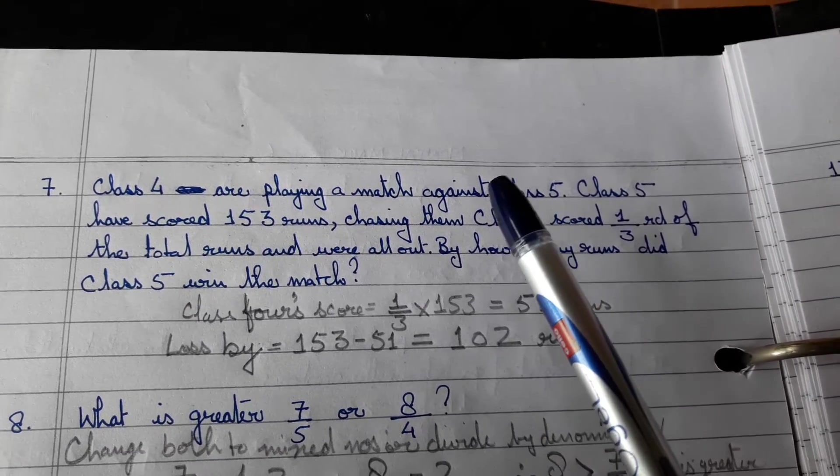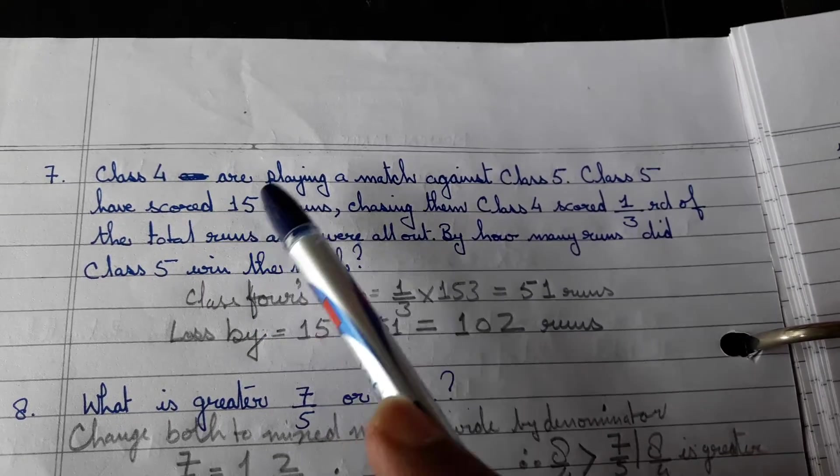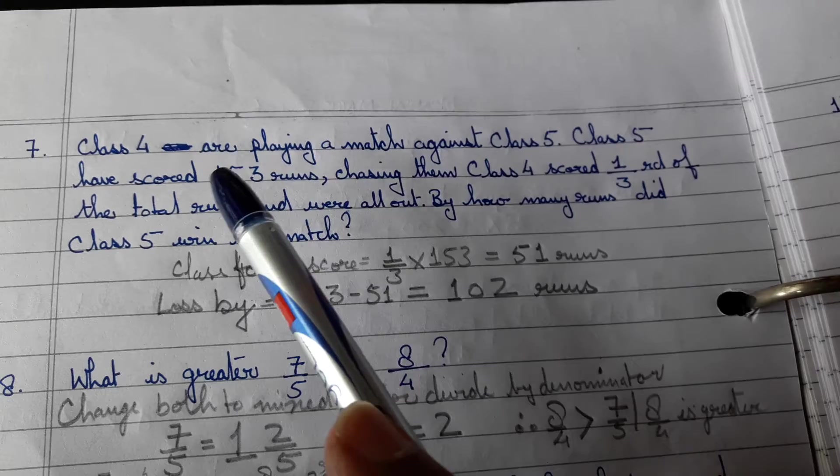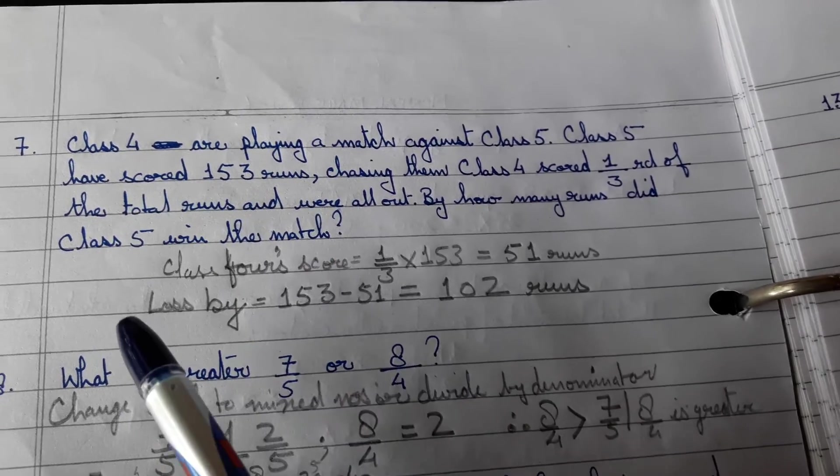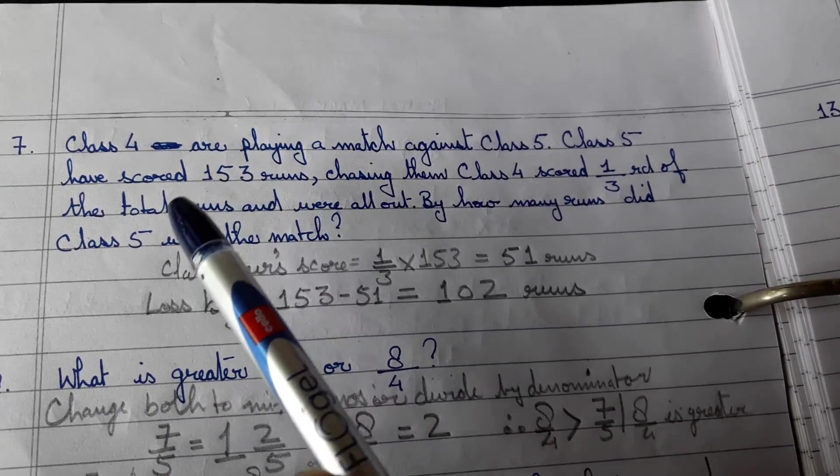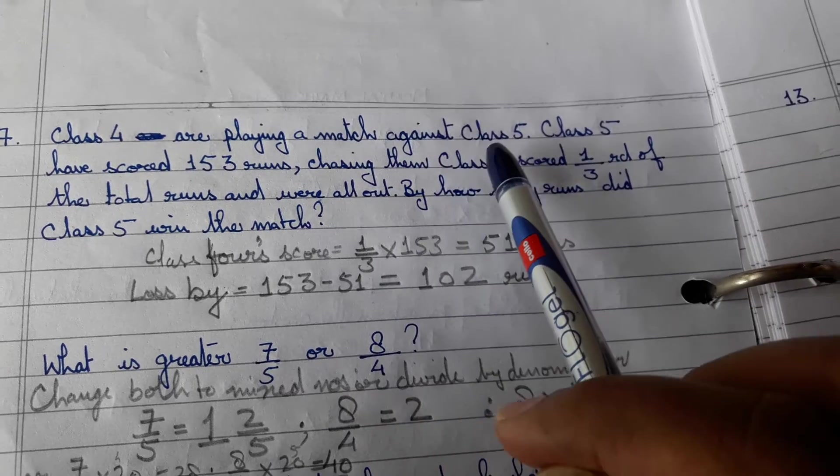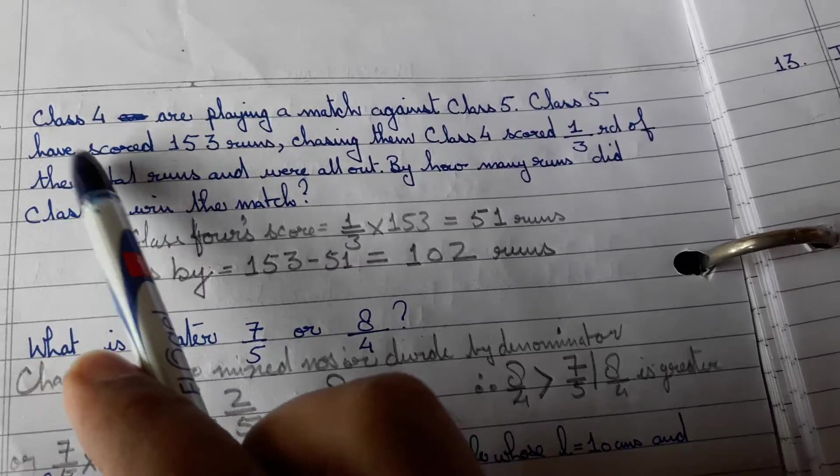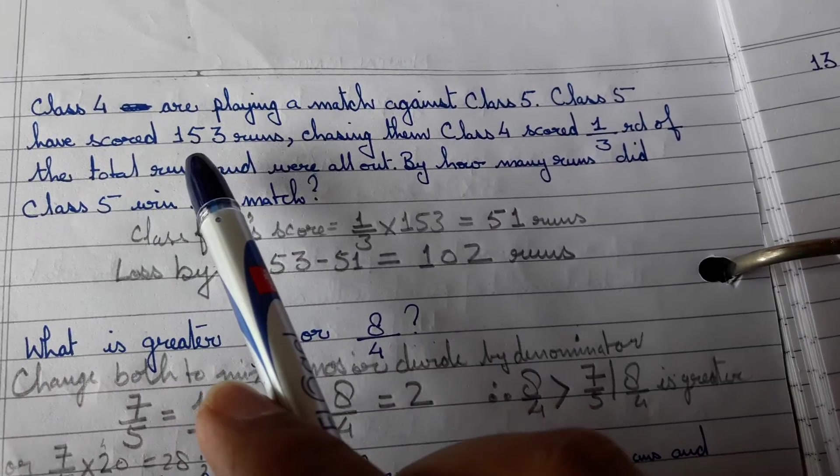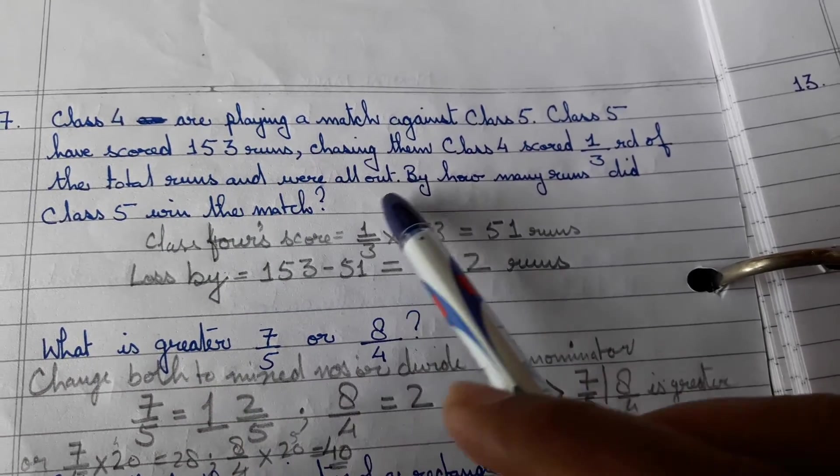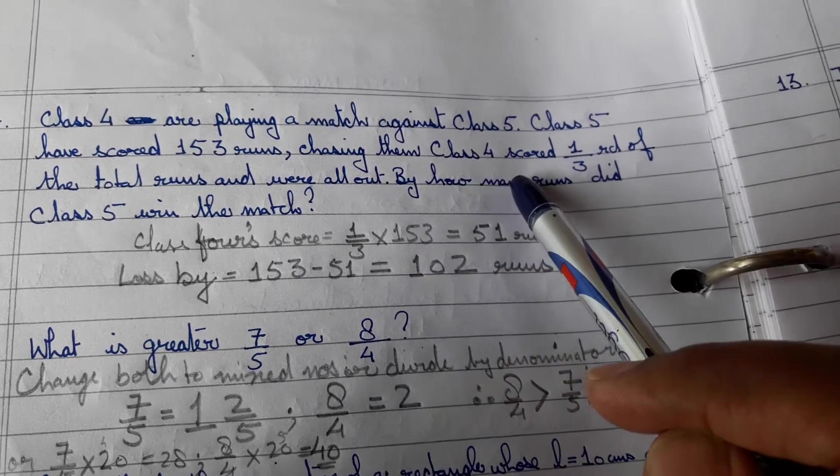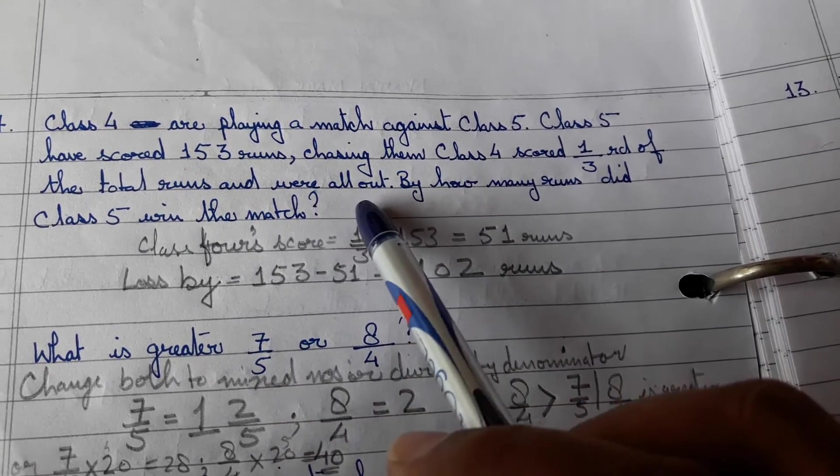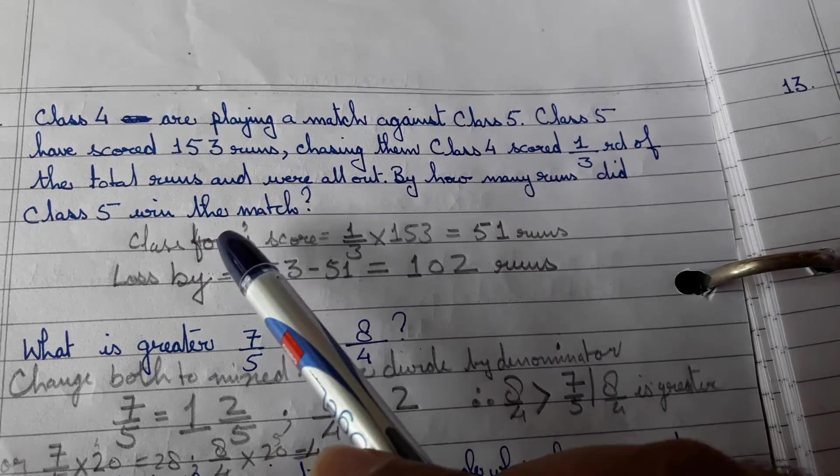Class 4 are playing a match against class 5. Now why do I say are playing? Because I am referring to the players. The players of class 4 are playing a match against class 5. Class 5 have scored 153 runs. Chasing them, class 4 scored 1 third of the total runs and were all out. By how many runs did class 5 win the match?